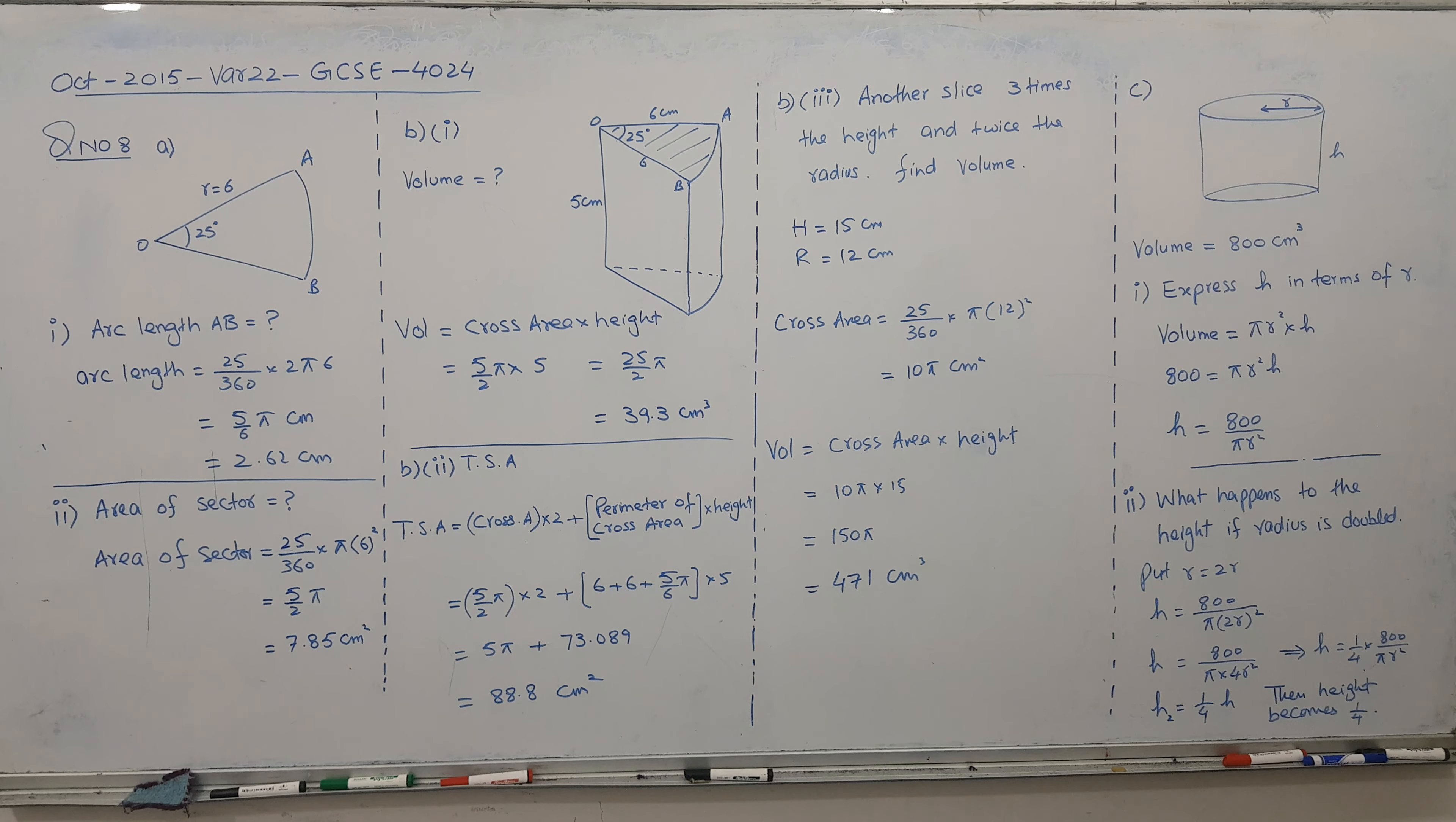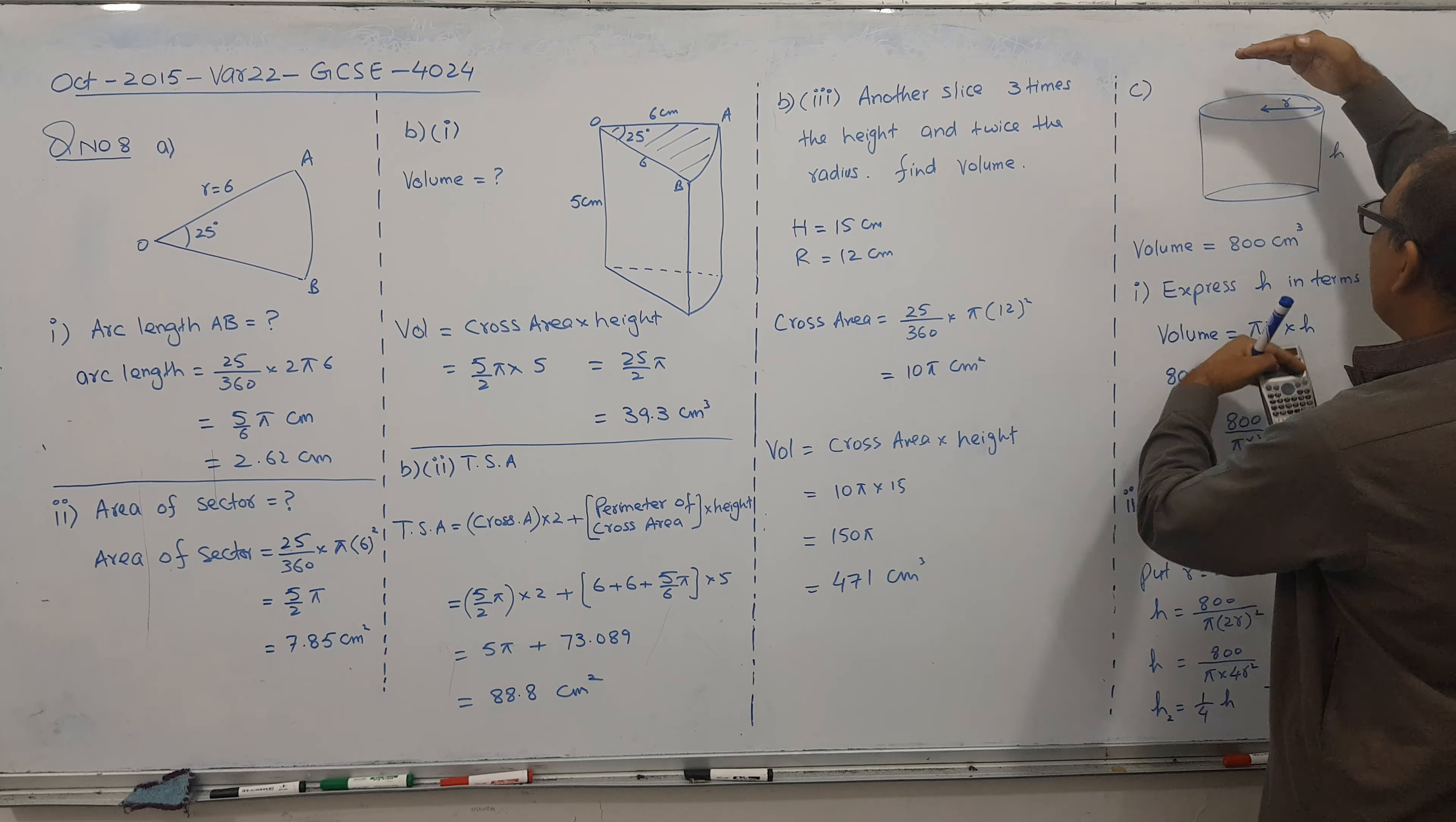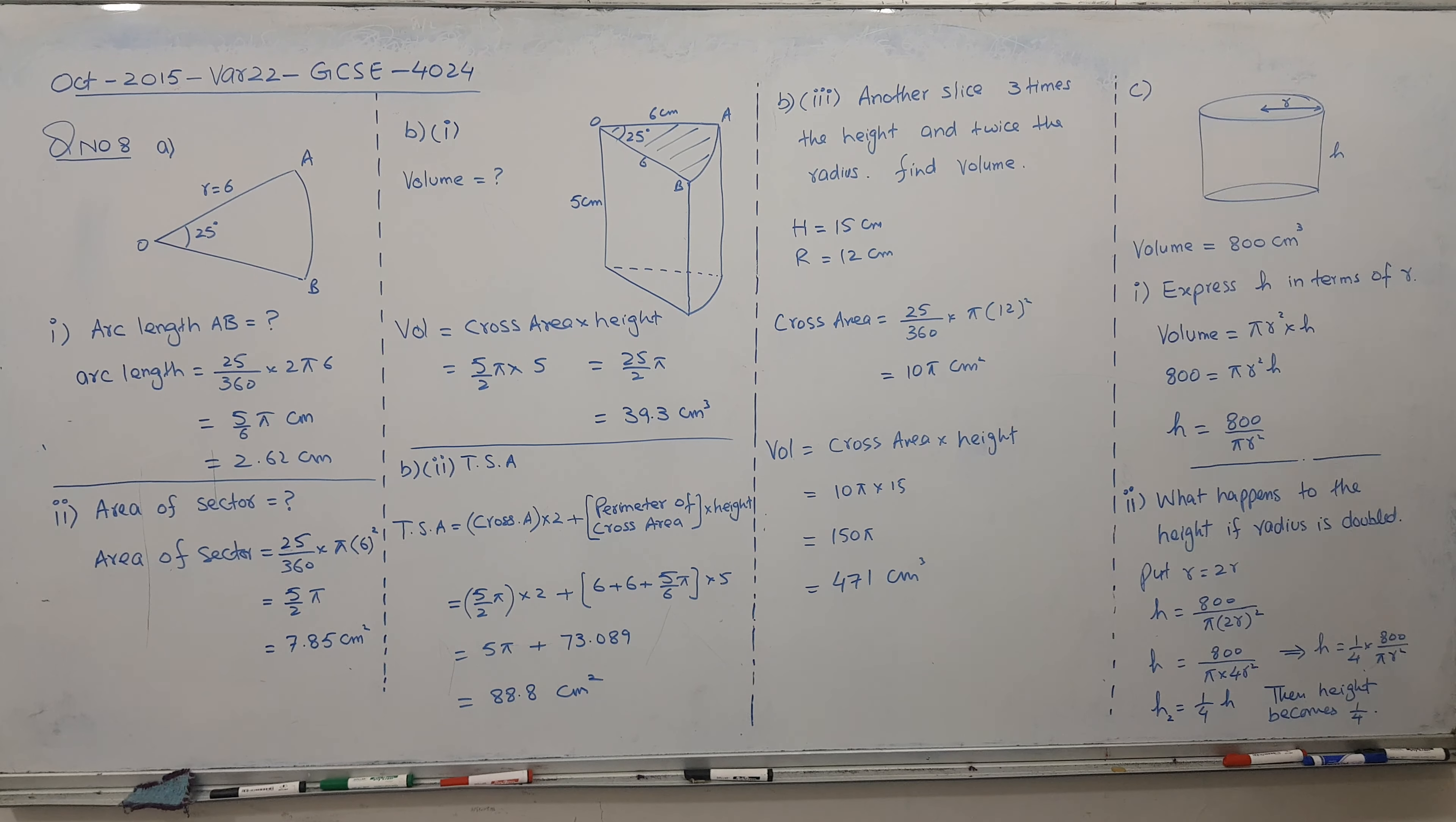So this is the idea behind. So when you increase the radius, increasing the height and increasing the radius. When you expand it, the height will reduce. The height becomes 1 fourth time to the previous height. It's time to the height.